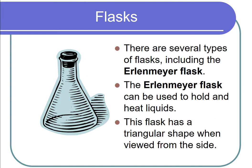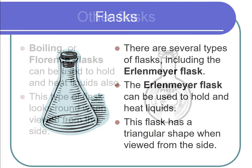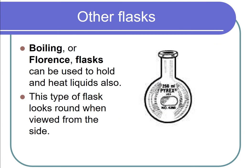There are several types of flasks, including the Erlenmeyer flask. The Erlenmeyer flask can be used to hold and heat liquids; this flask has a triangular shape when viewed from the side. Boiling or Florence flasks can also be used to hold and heat liquids; this type of flask looks round when viewed from the side.